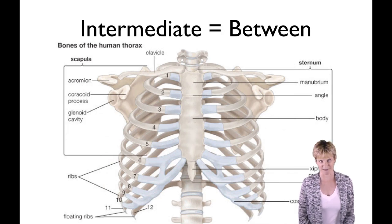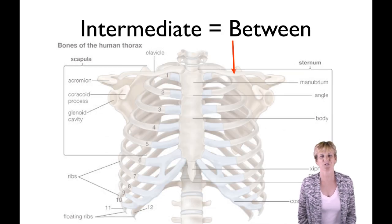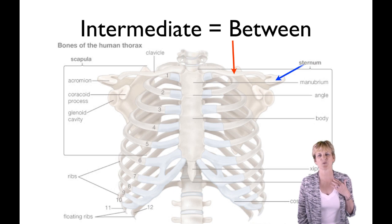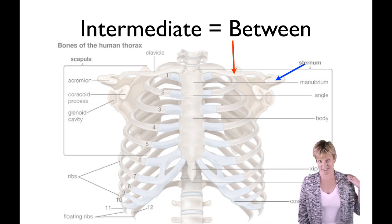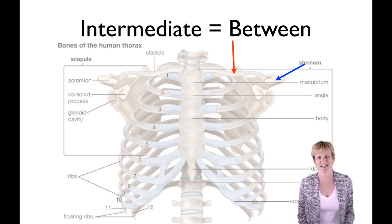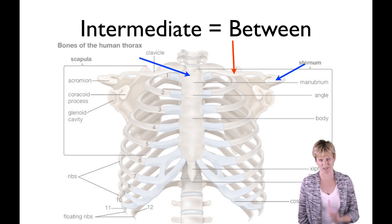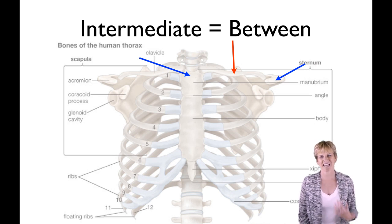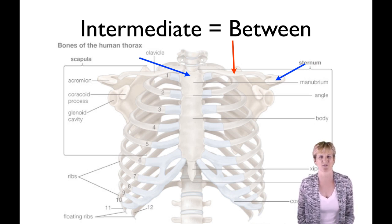Intermediate means between. For example, the clavicle or collarbone is intermediate between the acromion process of the scapula — that's the bony part that sticks out — and the sternum or breastbone, specifically the upper part called the manubrium. So the clavicle lies between those two structures, and you'll see that term quite a bit.